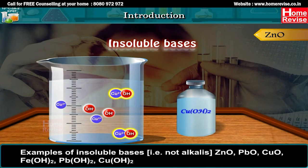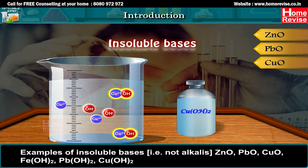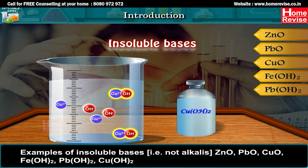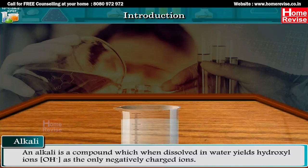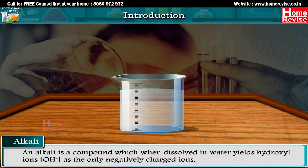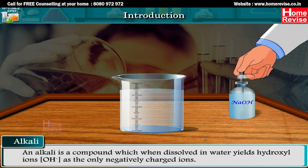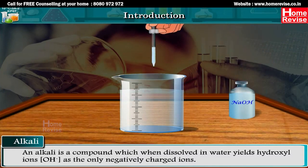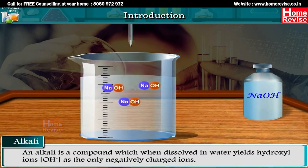Examples of insoluble bases (i.e., not alkalis): ZnO, PbO, CuO, Fe(OH)2, Pb(OH)2, Cu(OH)2.